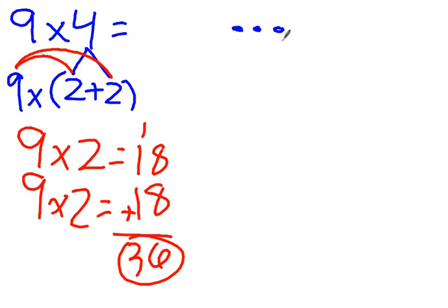1, 2, 3, 4, 5, 6, 7, 8, 9. And since it's times 4, I have to do 4 rows of those. 7, 8, 9. 1, 2, 3, 4, 5, 6, 7, 8, 9.